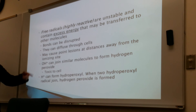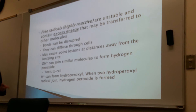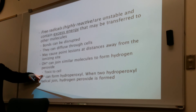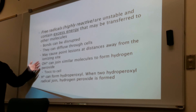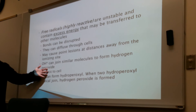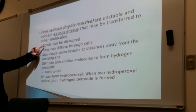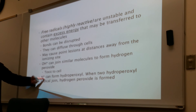This is where it becomes dangerous. If you have a free radical OH•, it can join similar molecules to form hydrogen peroxide, which is toxic to the cell. H• can form hydroperoxyl, and when two of those join, hydrogen peroxide is also formed — also toxic to the cell. However, this is also utilized in radiation therapy to kill cancer cells — using free radicals to cause disruption or toxicity in surrounding cancer cells.